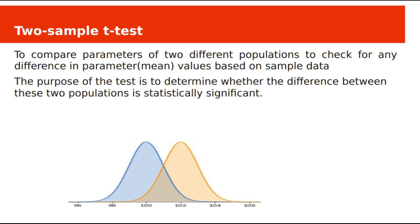In the last class we saw one sample t-test. Now we will see two sample t-tests. Two sample t-tests are used to compare parameters of two different populations to check if there is any difference in population parameters such as mean, based on given sample data.